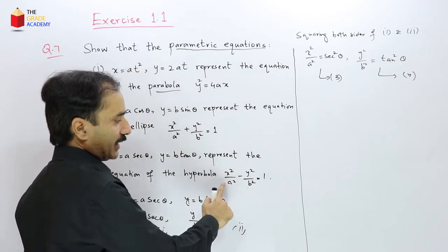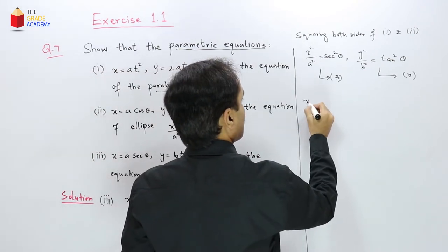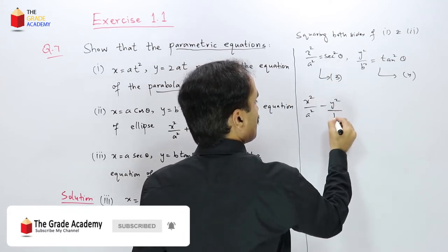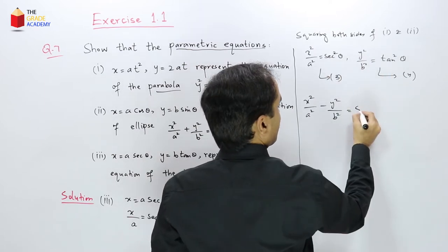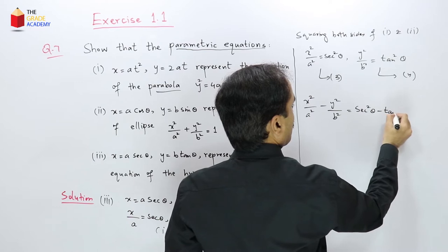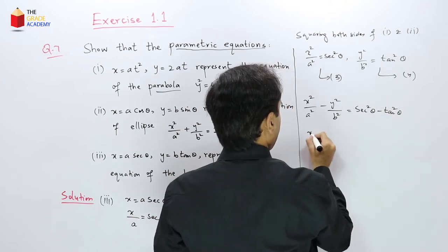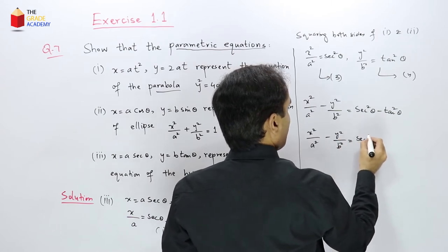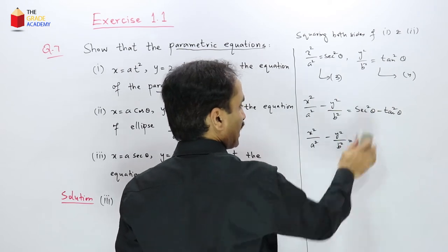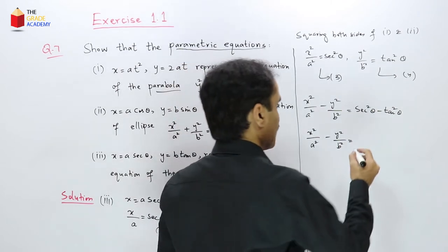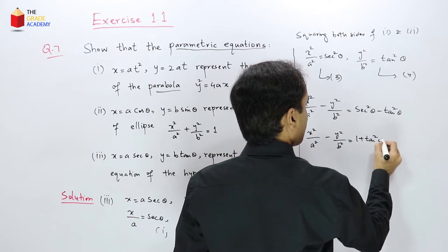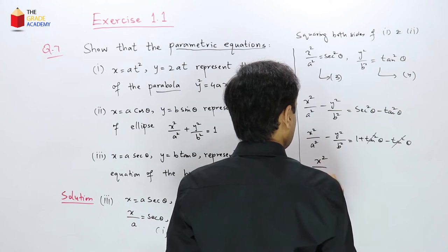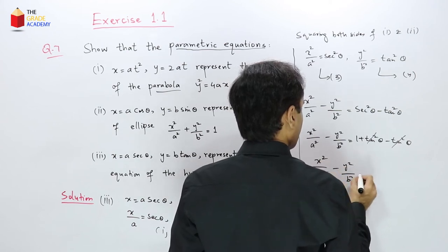Subtracting equation 4 from equation 3: x²/a² − y²/b² = sec²θ − tan²θ. Using the identity sec²θ = 1 + tan²θ, we get sec²θ − tan²θ = 1. Therefore x²/a² − y²/b² = 1.